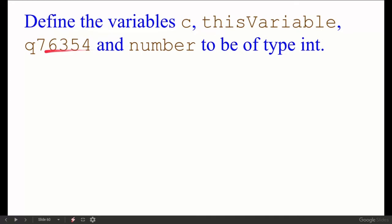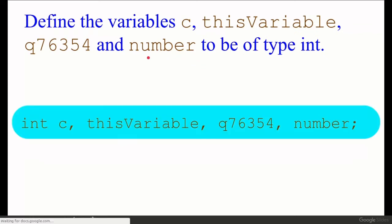Define the variables c, thisVariable, q7, 6, 3, 5, 4, and number to be of type integer. We have to write one C program statement that declares all these variables — c, thisVariable, q7, 6, 3, 5, 4, and number — as integers. The answer is: int c, thisVariable, q7, 6, 3, 5, 4, number;